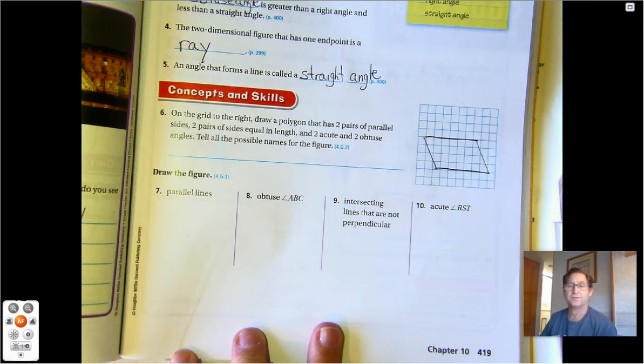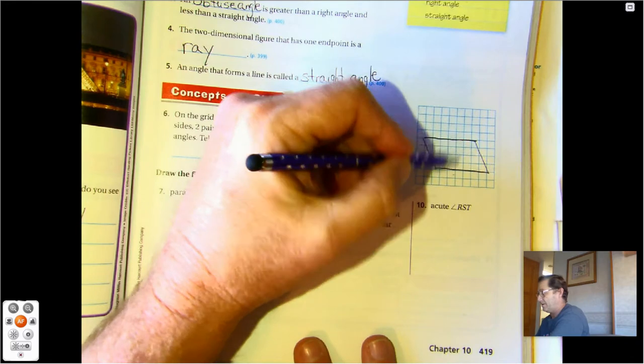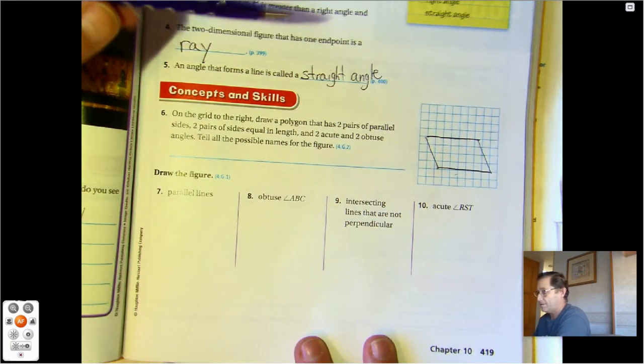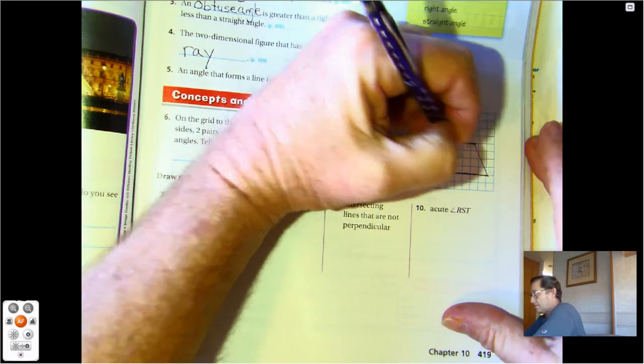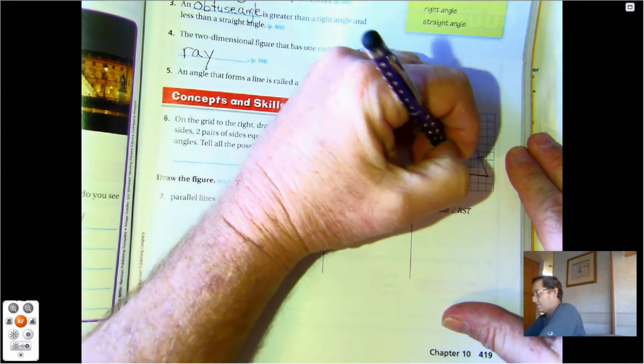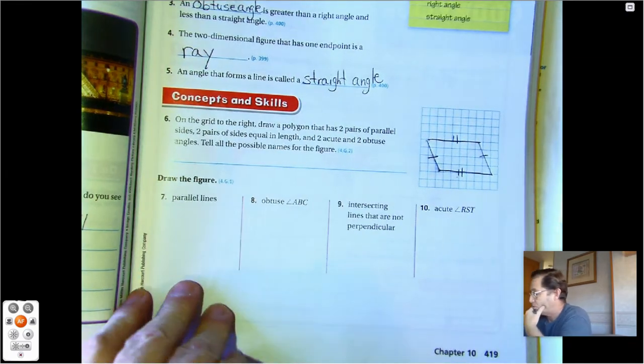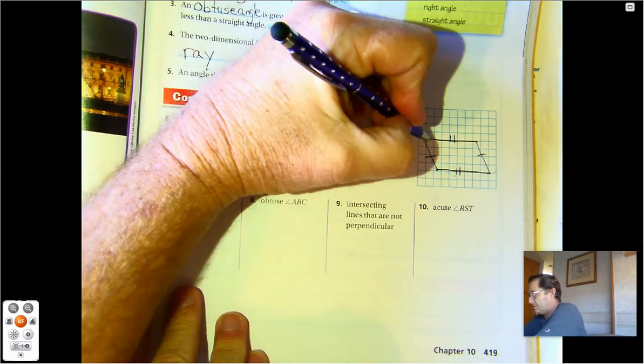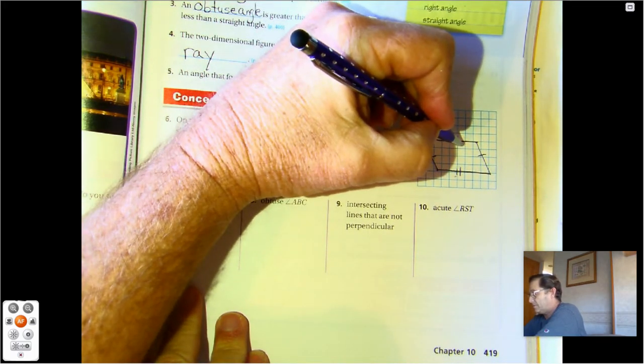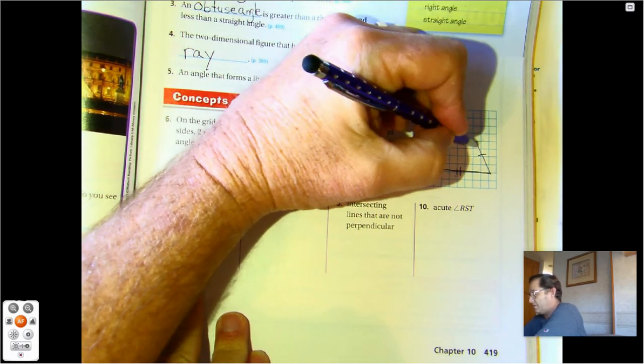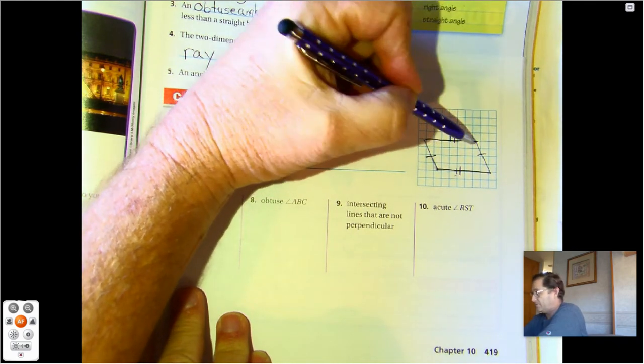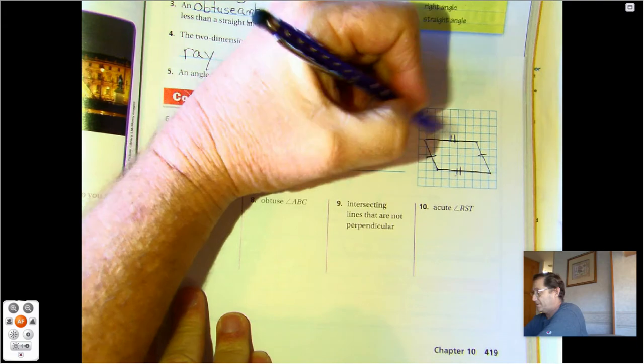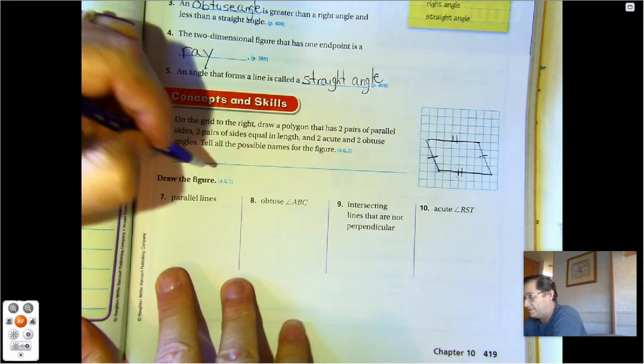This polygon has two pairs of parallel sides—so those are parallel. Two pairs of sides equal. Two acute angles—this is an acute angle and this is an acute angle—and then these are obtuse angles. That's an obtuse, that's an obtuse, and then these two are acute angles.